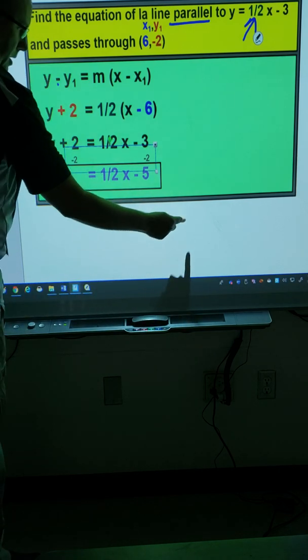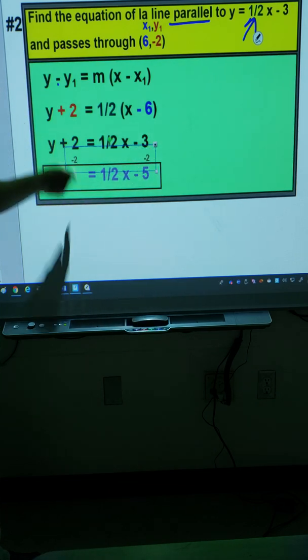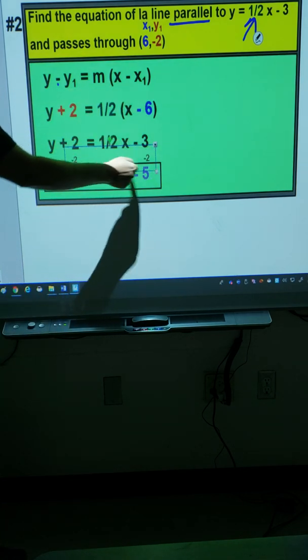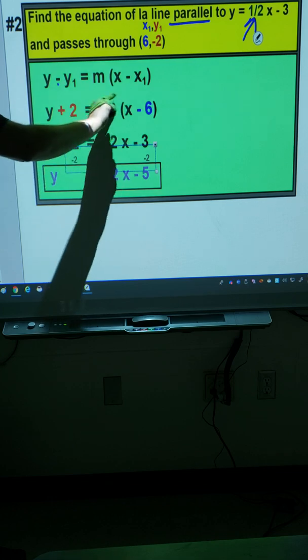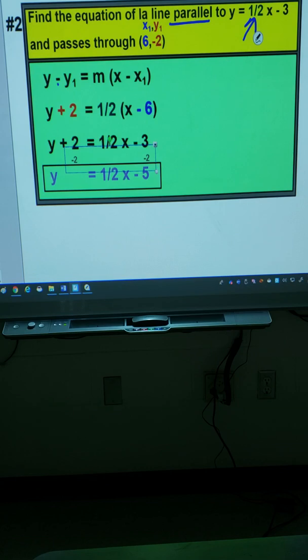As we're continuing with this question, I distribute it here. I know this is a little difficult to see with this box, but I can't seem to get rid of it. I have times negative 6 is negative 3. And then as I move the 2 across by doing the opposite, you should subtract 2. And negative 3 take away 2 would give you negative 5.